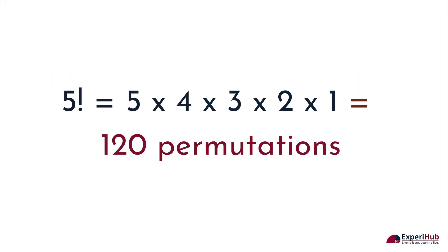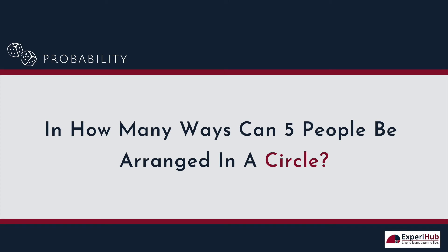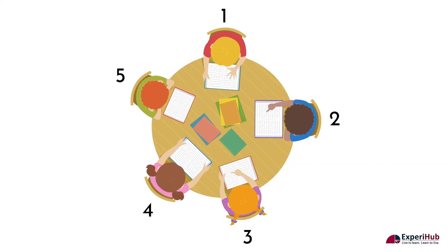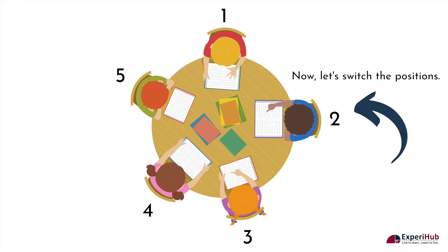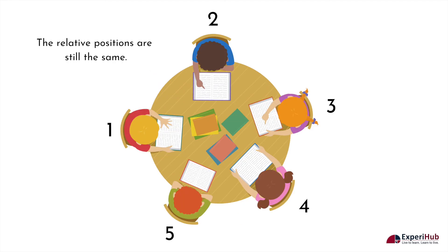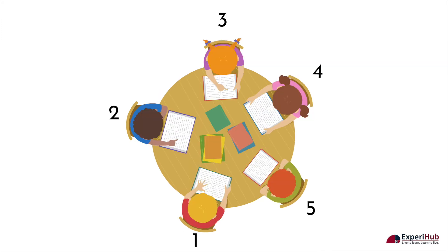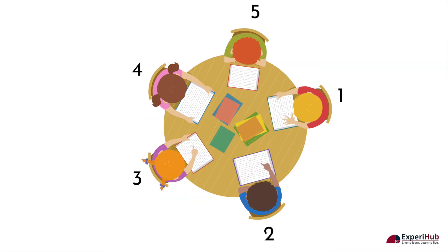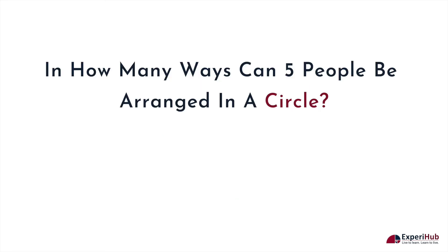Now let's figure out in how many ways can five people be arranged in a circle. Here we have five people sitting at a circular table. If we switch positions while keeping the relative positions the same — one is still sitting next to two, and two is still sitting next to three — we have to do this five times for five different people. We need to take into account these repeated arrangements.